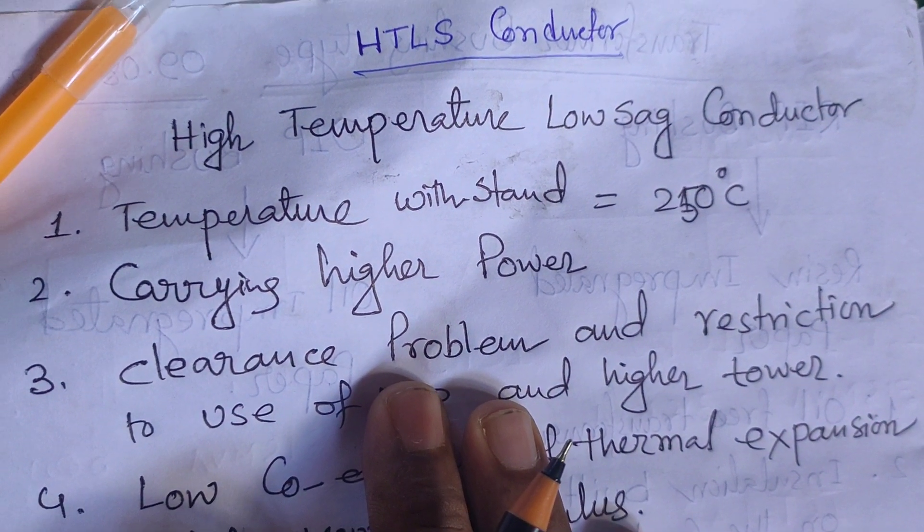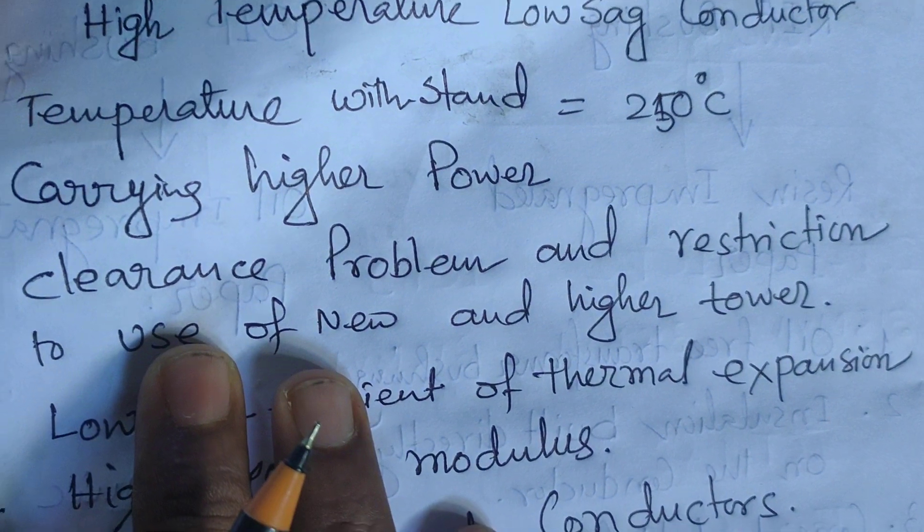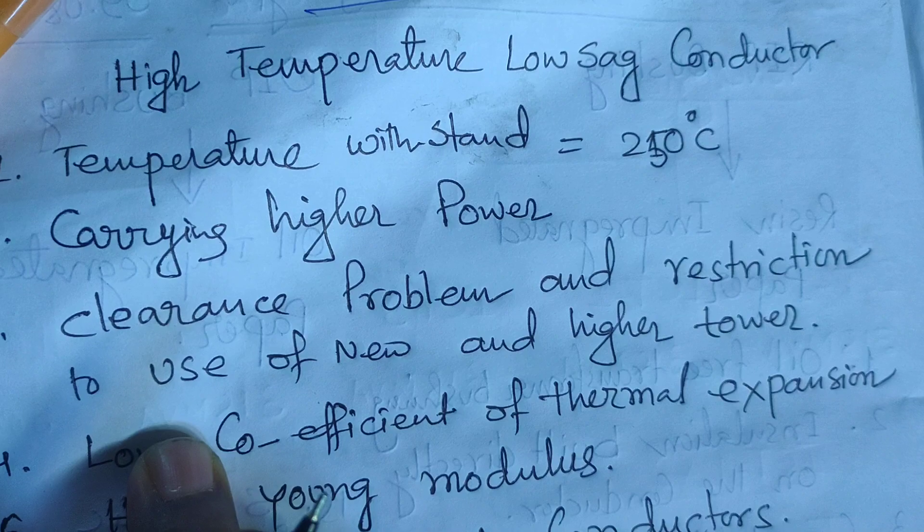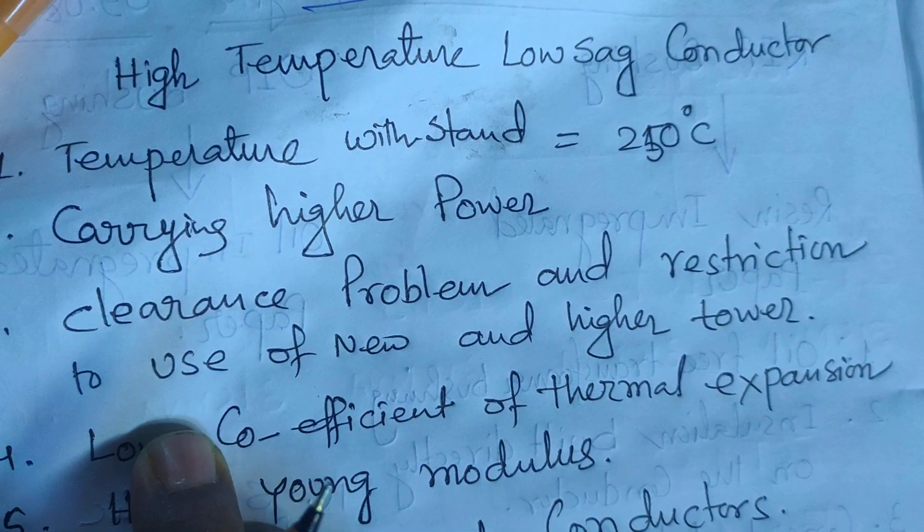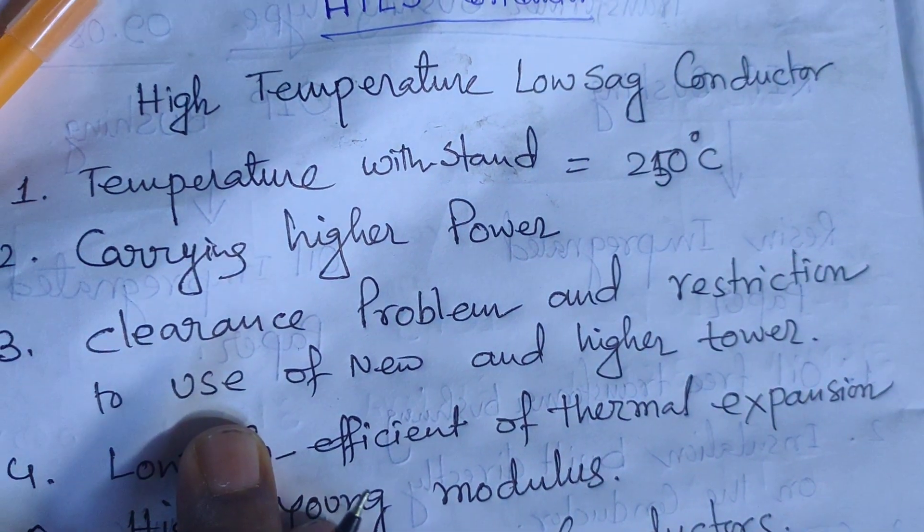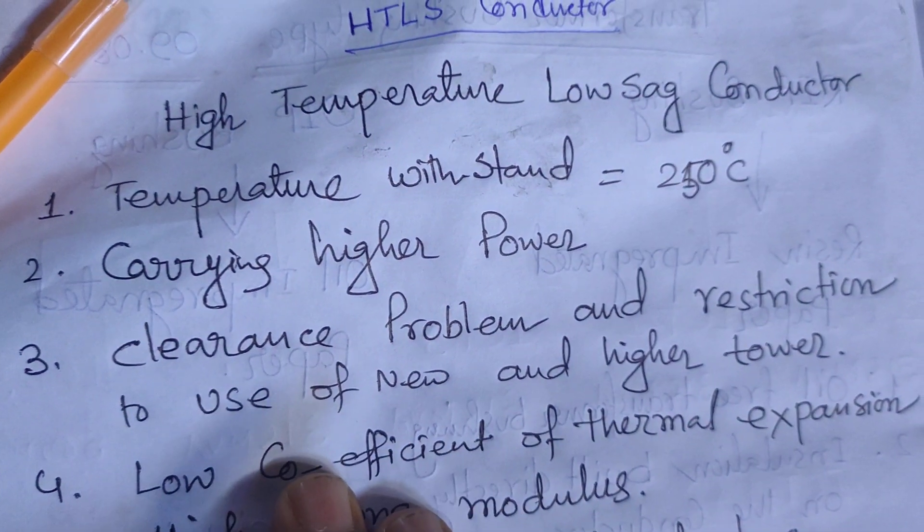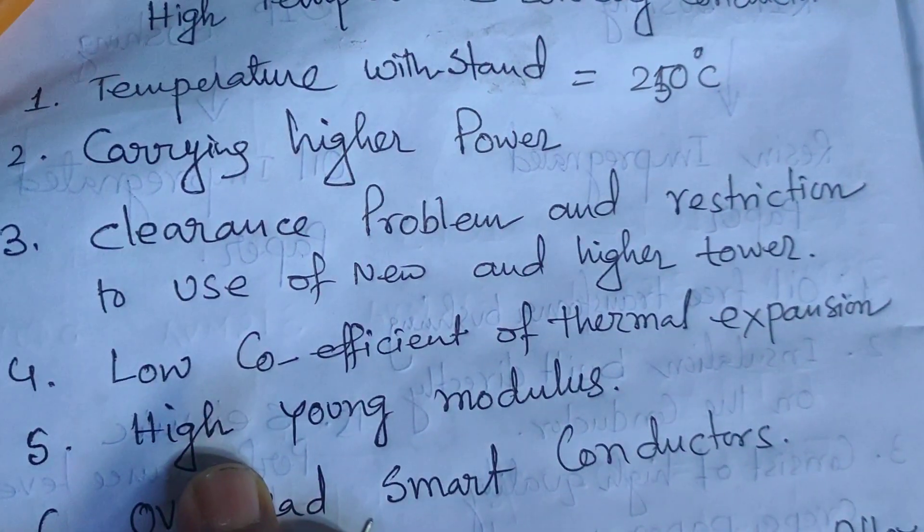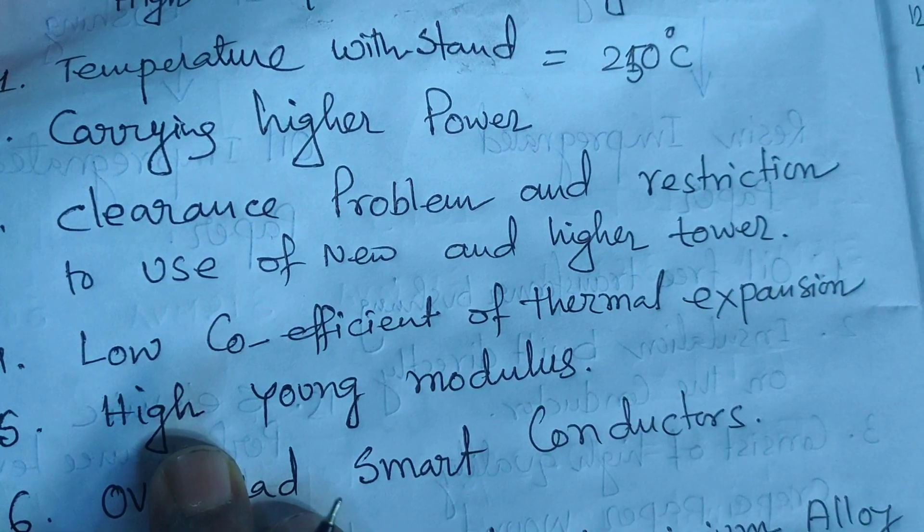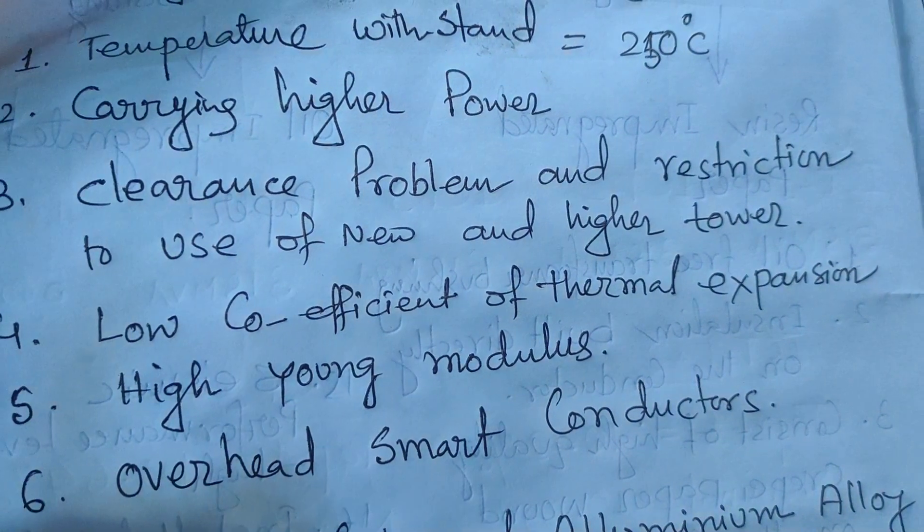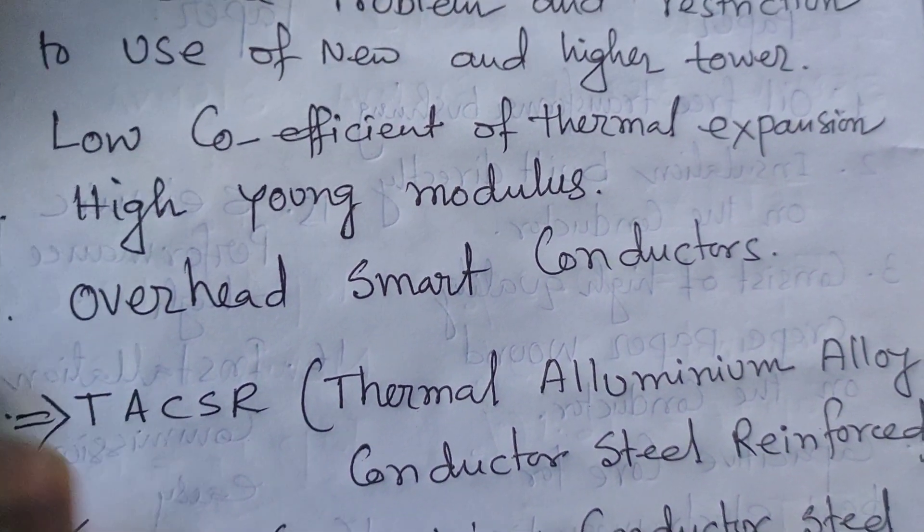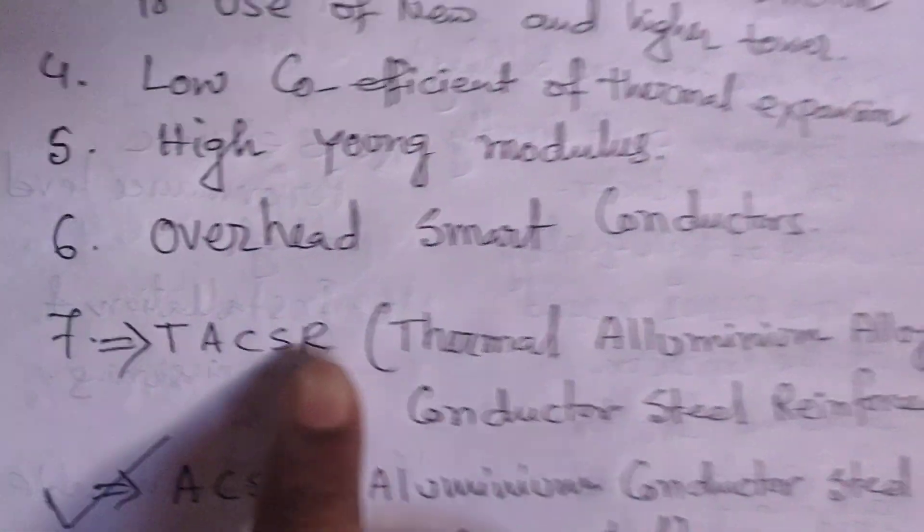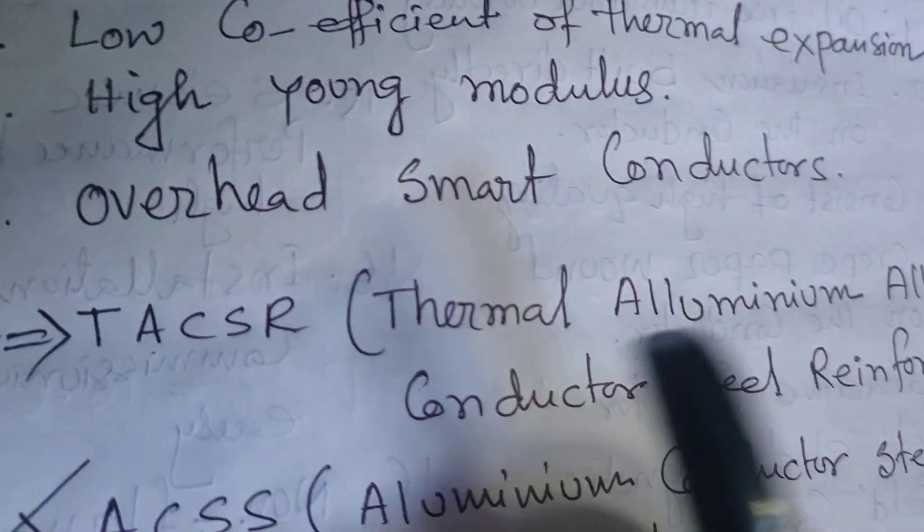It avoids clearance problems and restrictions on using new and higher towers, so economic involvement is very low. It has low coefficient of thermal expansion and high Young's modulus. That's why it's called an overhead smart conductor.